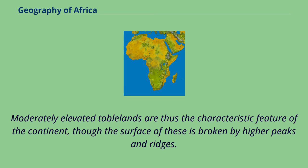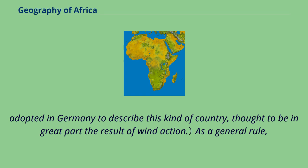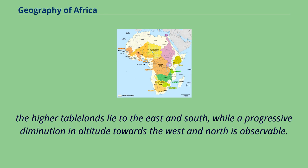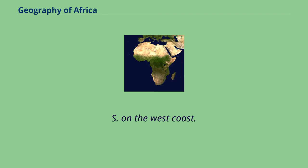Moderately elevated tablelands are the characteristic feature of the continent, though their surface is broken by higher peaks and ridges. So prevalent are these isolated peaks and ridges that a specialized term, Inselberg Landschaft — island mountain landscape — has been adopted in Germany to describe this kind of country, thought to be in great part the result of wind action. The higher tablelands lie to the east and south, while a progressive diminution in altitude towards the west and north is observable. Apart from the lowlands and the Atlas mountain range, the continent may be divided into two regions of higher and lower plateaus, the dividing line running from the middle of the Red Sea to about 6 degrees S on the west coast.